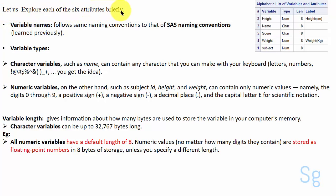Let us explore each of the six attributes briefly. Variable names follow the same naming conventions as SAS naming conventions that we have learned previously. Variable types can be character or numeric.